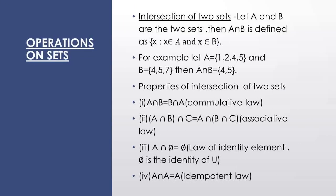Next is the intersection of two sets. Let A and B be two sets, then A intersection B is defined as the set of all x such that x belongs to A and x belongs to B. Intersection में वो elements आते हैं जो A और B के बीच में common हैं. For example, A = {1, 2, 4, 5} and B = {4, 5, 7}. A और B के बीच में common elements 4 and 5 हैं, so A intersection B = {4, 5}.